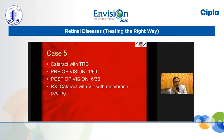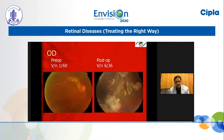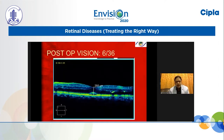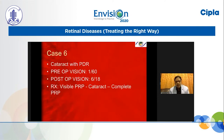Case 5: Cataract with TRD. Preoperative vision 1/60, postoperative vision 6/36. Cataract with vitrectomy and membrane peeling was done. Vision improved with silicone oil. You can see the pre- and postoperative OCT as well.